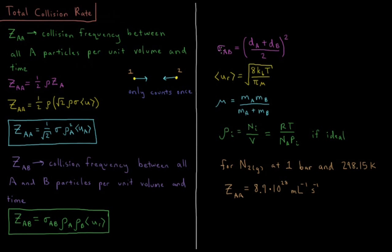And then we multiply by UR, the relative velocity between the two of them. Sigma AB, the mean cross-sectional area, is the effective diameter of A plus the effective diameter of B over 2, all squared — so we're taking the mean diameter between the two and squaring it. The relative velocity is the average velocity of a particle with the reduced mass mu between the two species, where mu equals the product of MA and MB divided by the sum of MA and MB.